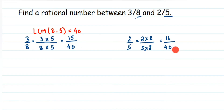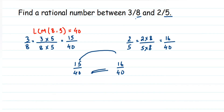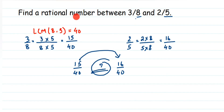Now here is another important step. I want to find rational numbers between these two. But if you observe, the gap is very small — after 15/40 the next immediate number is 16/40. There is no gap between 15 and 16. So how do we find numbers between them?